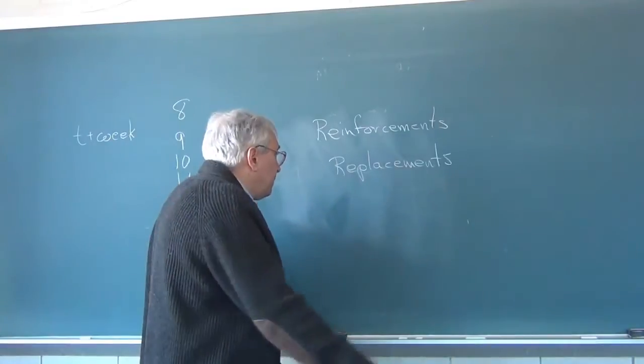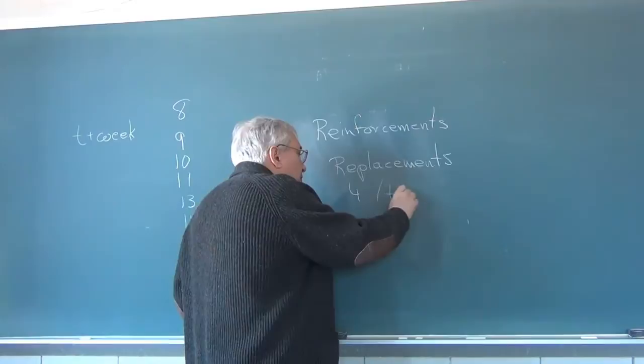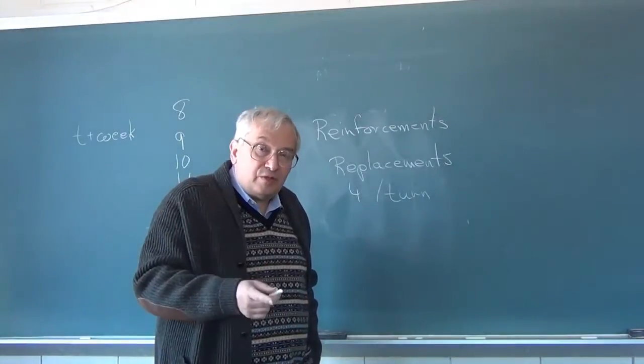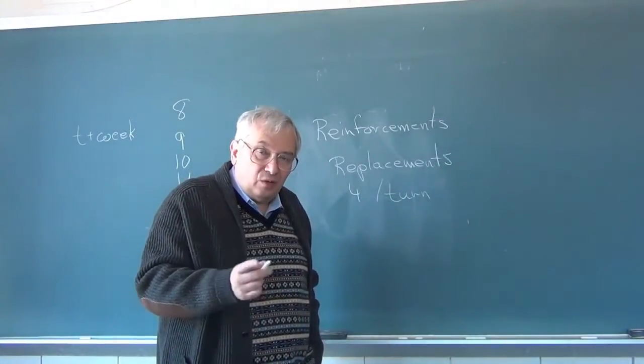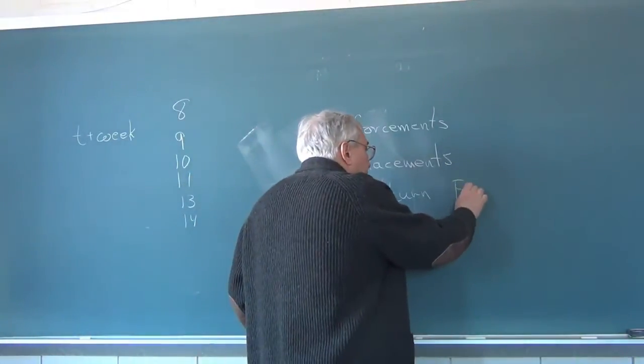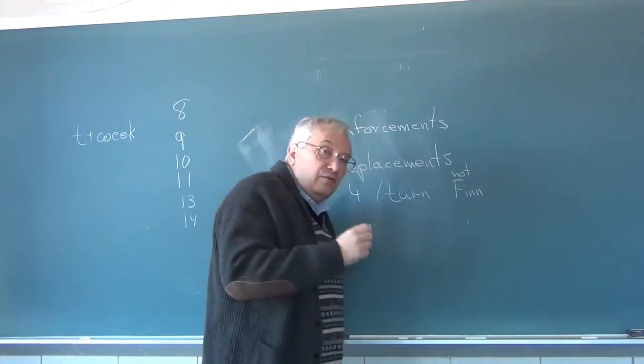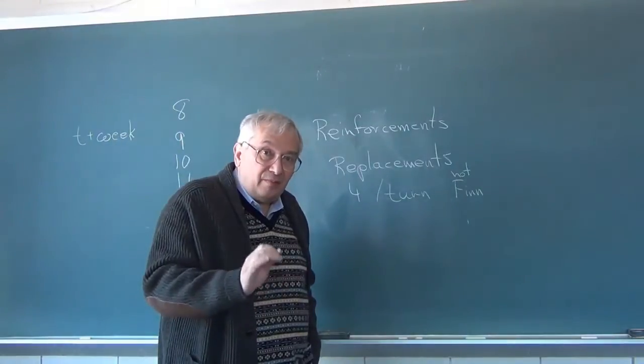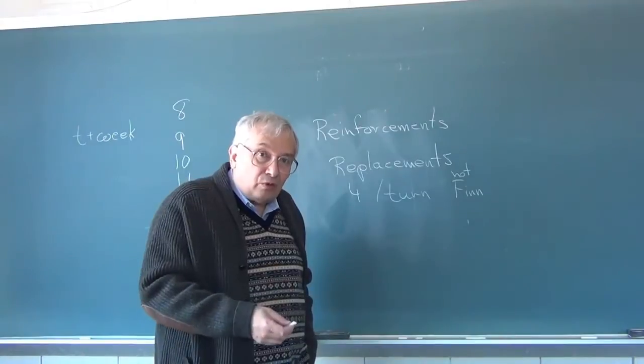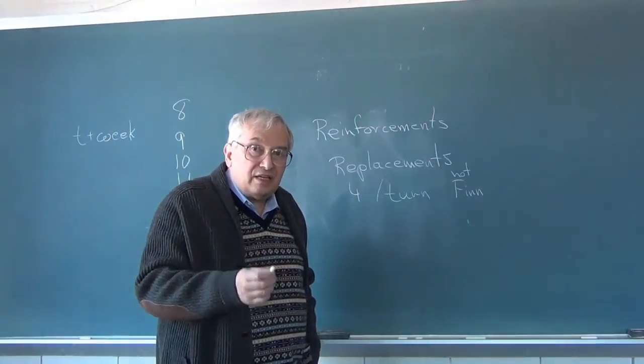For Stalingrad, the Germans get four defense factors per turn of replacements starting on turn two. And those replacements start in Warsaw and no place else. The replacements may be any units that have been eliminated, except the Finnish units are never replaced. Once they're wiped out, they're off the map, that's it. But the Germans can pull up anything else they want. Armor, small Romanian units if they need something small and weak, as they see fit.